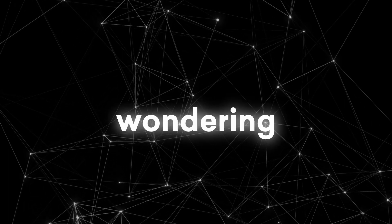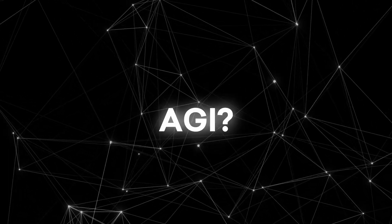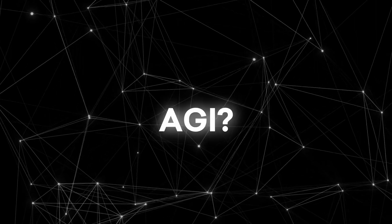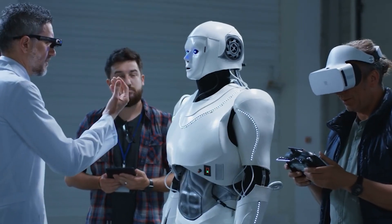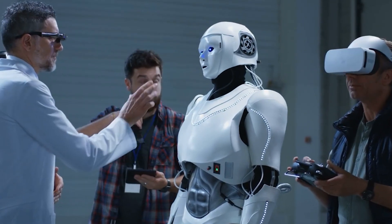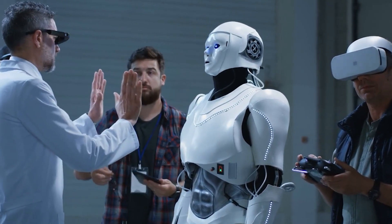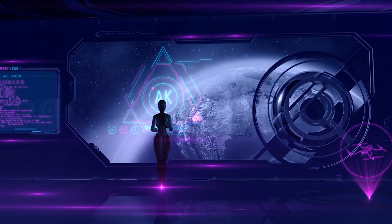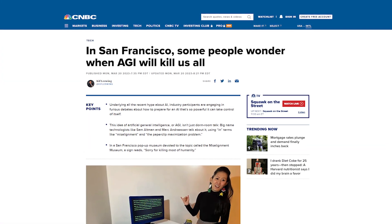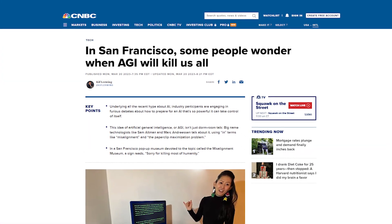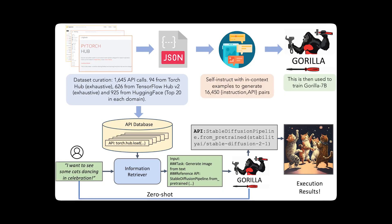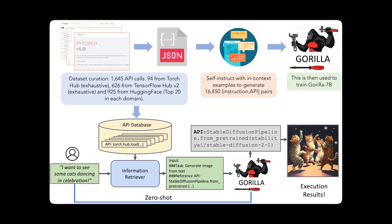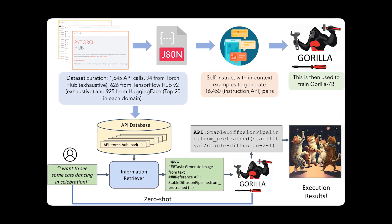But you must be wondering, how does Gorilla compare to AGI? First of all, we have to understand: what is AGI? AGI is the hypothetical intelligence of a machine that can understand or learn any intellectual task that a human can do. AGI is the ultimate goal of AI research, but it is also one of the most difficult and controversial topics in the field. Gorilla is not AGI yet, but it is certainly one of the most advanced and versatile AI models ever created.